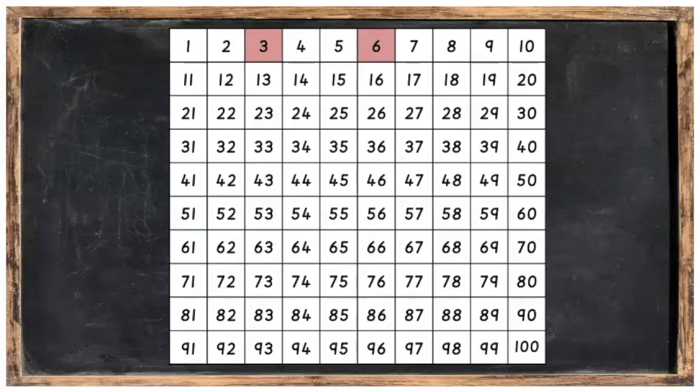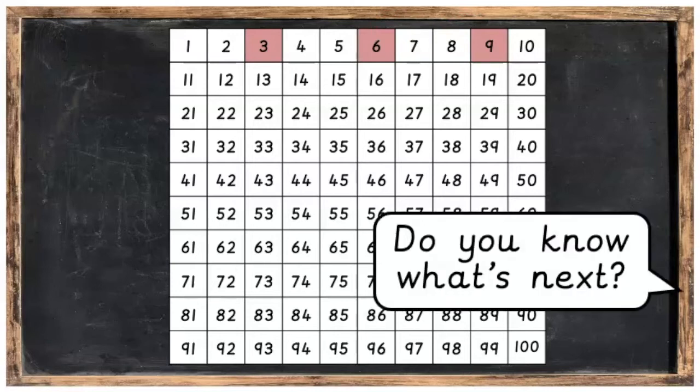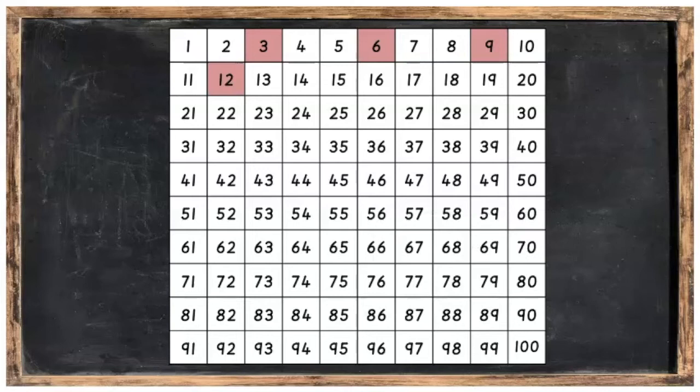After six, we'll hop on three more spaces. So, hop one, hop two, hop three, and we'll land on nine. Do you know what's next? We'll hop on three more spaces, and we'll land on twelve. Three more spaces, we'll land on fifteen. Three more, and we'll land on eighteen. Well done.